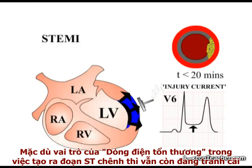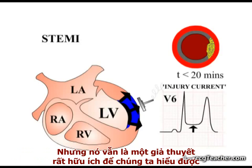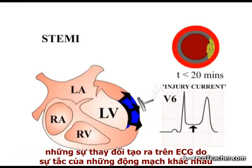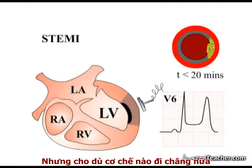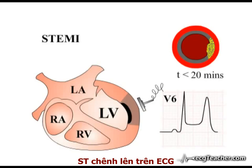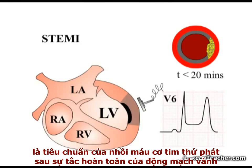Although the role of an injury current in generating ST elevation is controversial, it is a very useful concept when trying to understand the patterns of changes produced on the ECG by occlusion of different vessels. Whatever the mechanism generating the phenomenon, ST segment elevation on an ECG is the hallmark of evolving myocardial infarction secondary to complete occlusion of a coronary arterial vessel.